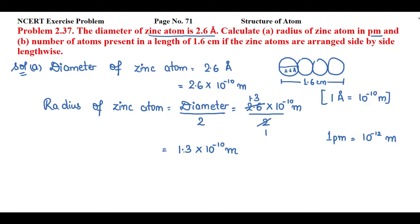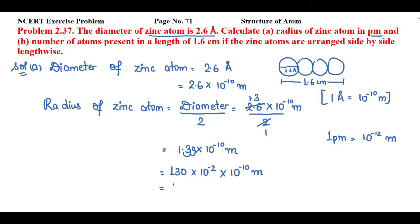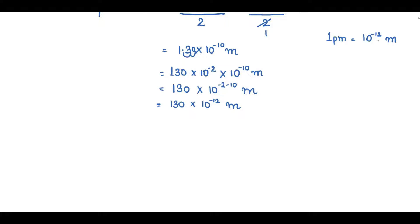I have to convert 1.3 into 10 raised to the power minus 10 meter into picometer. I will displace the decimal up to 2 digits from left to right, so the power will be negative and displacement is 2 digits. It becomes 10 raised to the power minus 2 into 10 raised to the power minus 10 meter. Adding the powers: minus 2 plus minus 10 equals minus 12. Since 1 picometer equals 10 raised to the power minus 12 meter, the radius of zinc atom is 130 picometer.